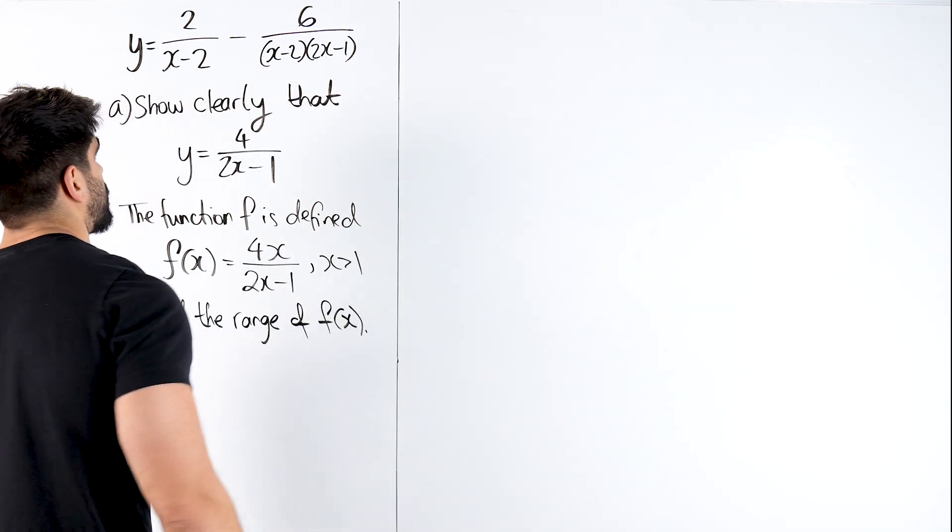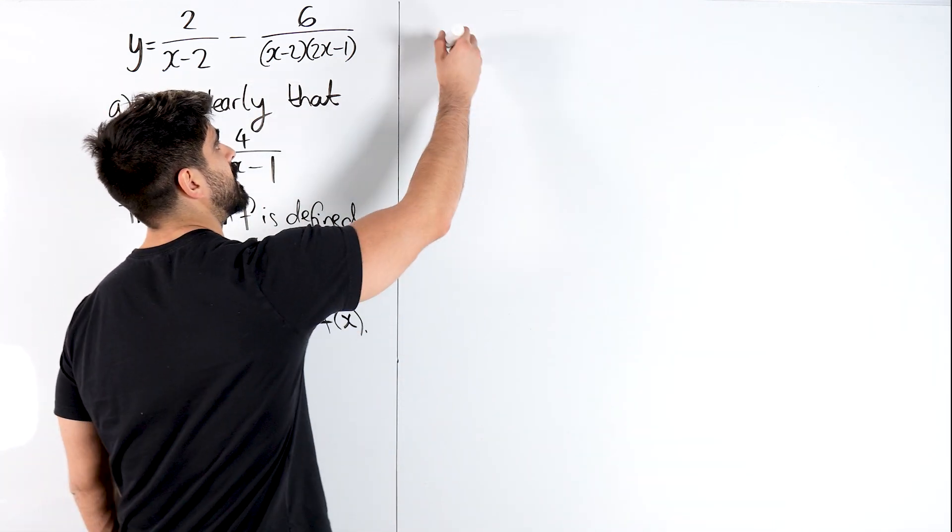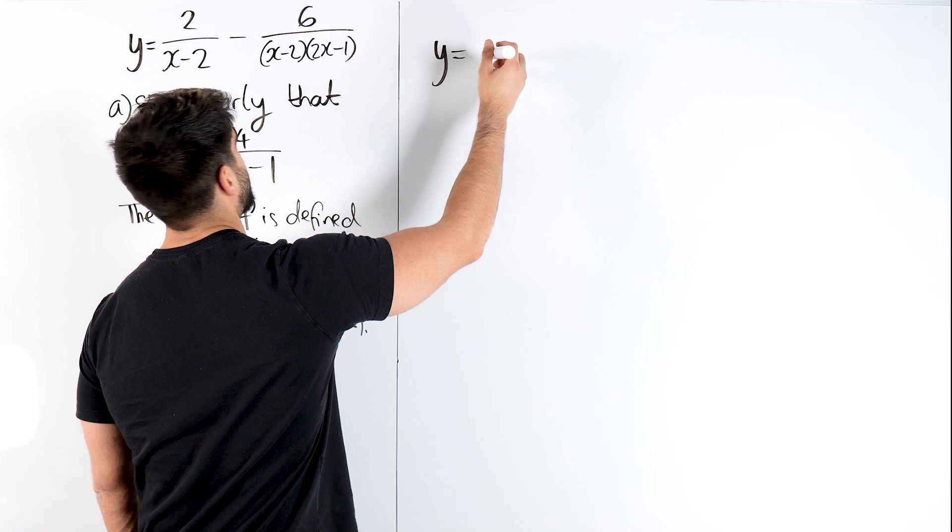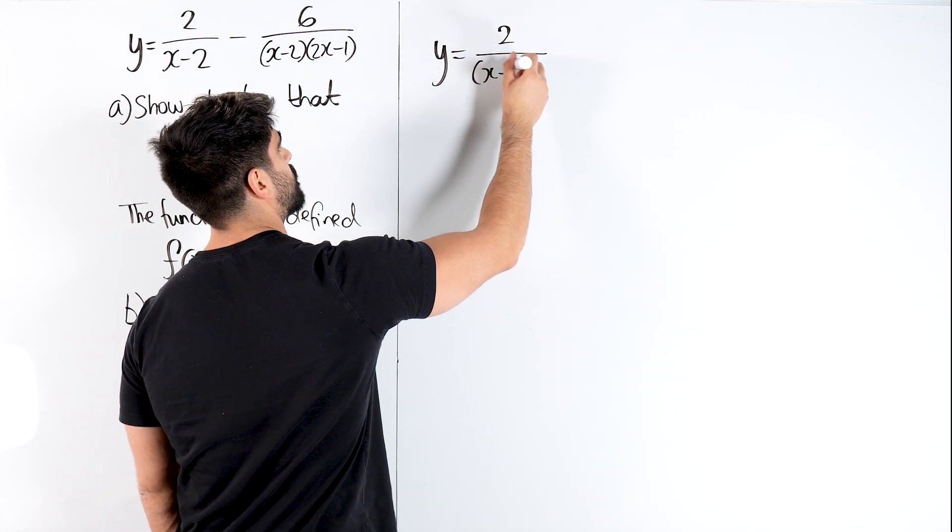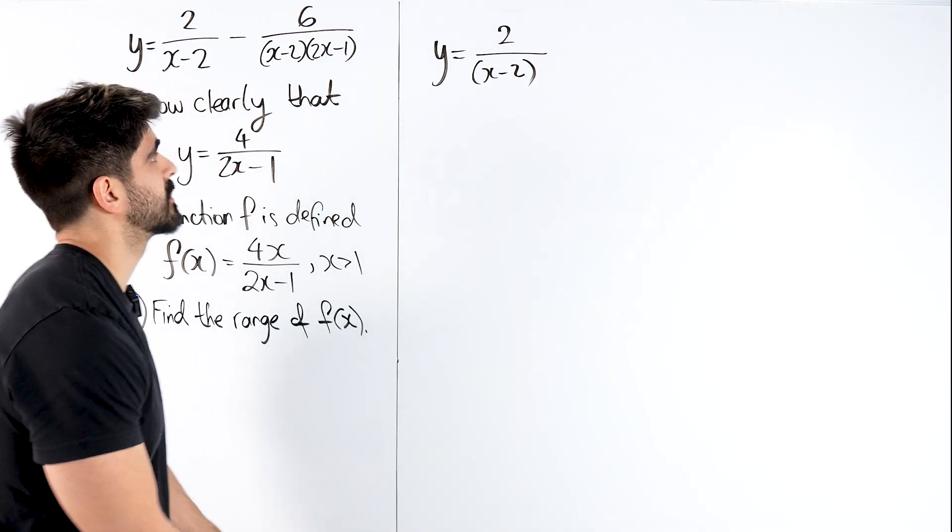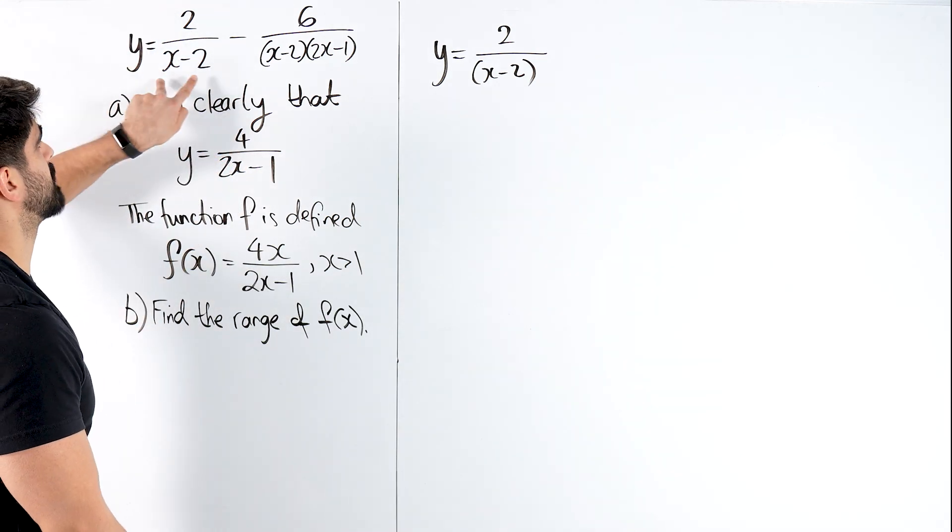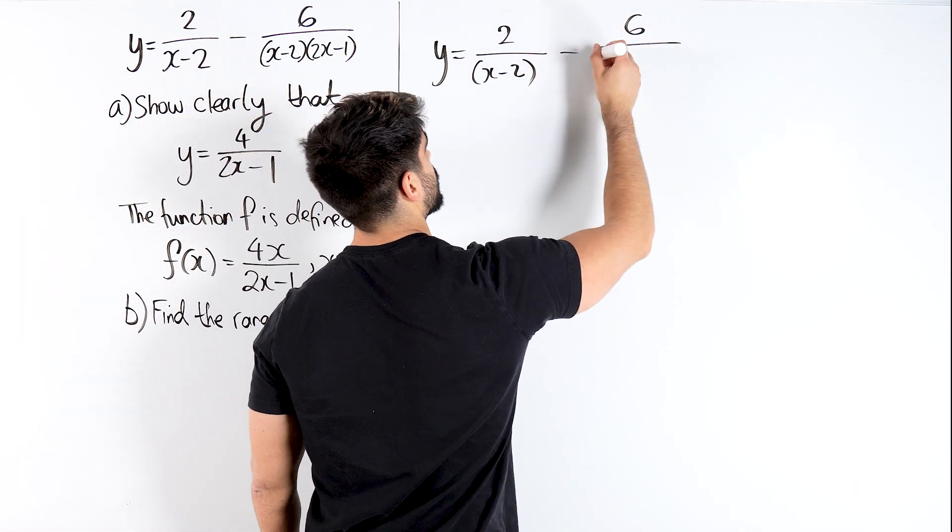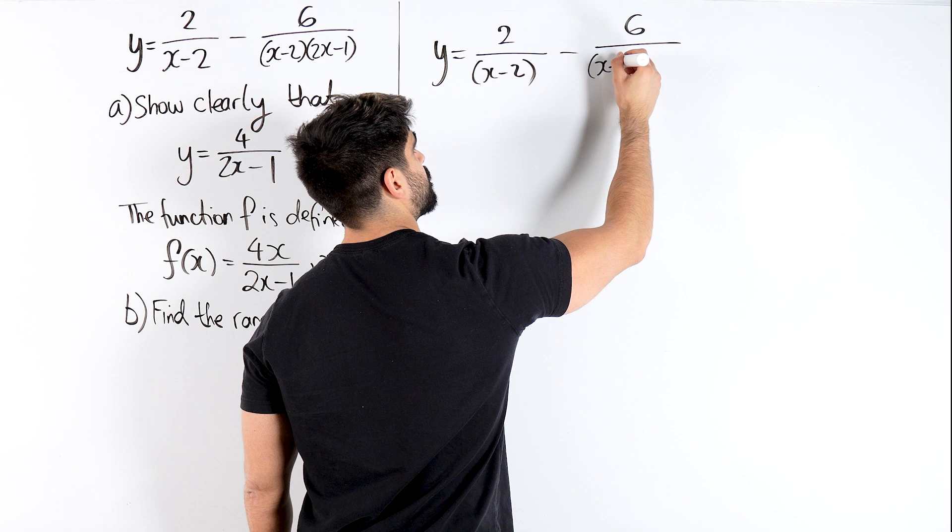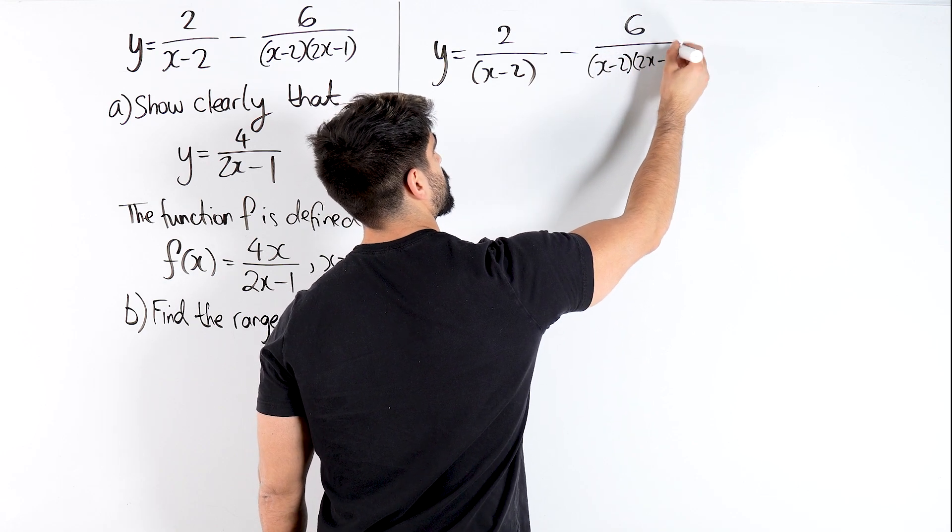Let's revise our GCSE algebraic fraction stuff. The first thing we're going to do is protect everything with a bracket that needs it. 2 obviously doesn't, it's one term. Here it's two terms so we need to introduce that bracket. Then we have minus 6 over (x-2)(2x-1).